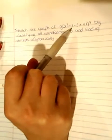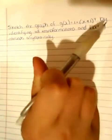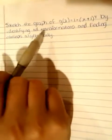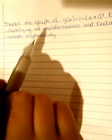Hello everyone. Today I'm going to sketch the graph of g(x) = 1 - (x+1)^4 by identifying all transformations and finding intercepts algebraically.